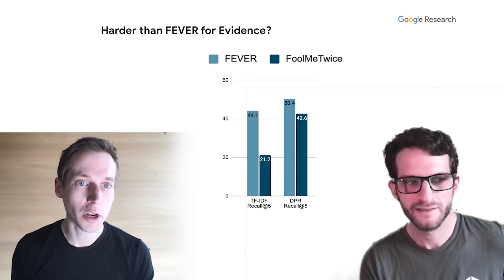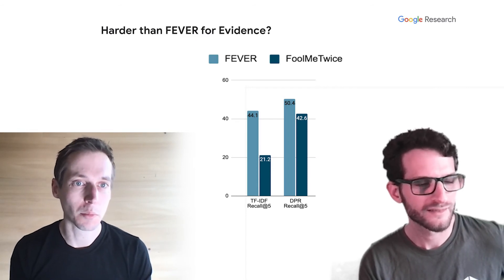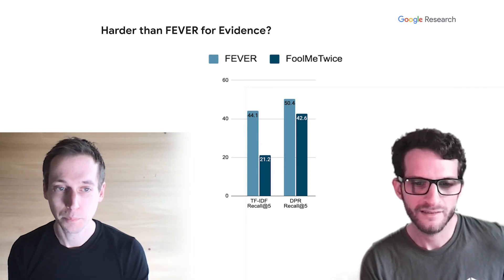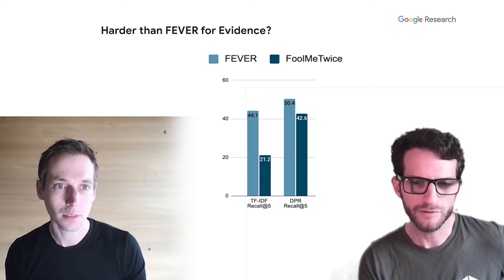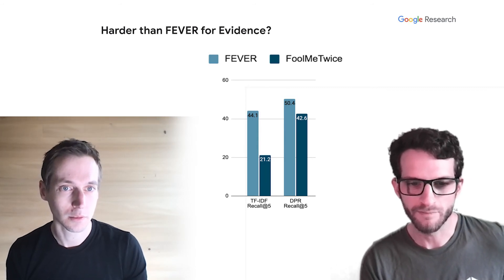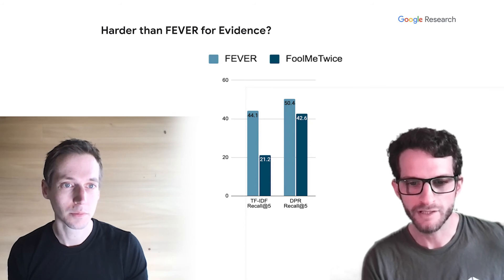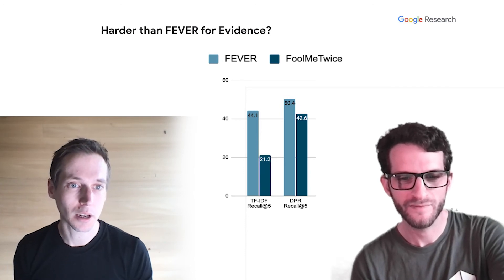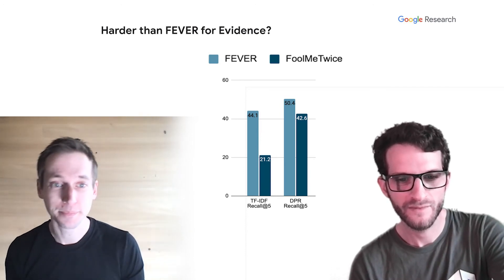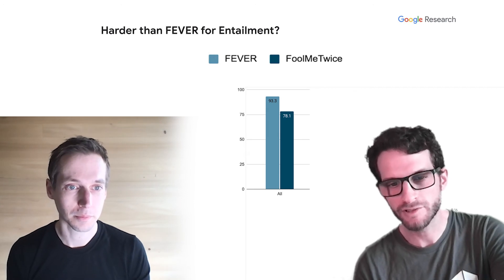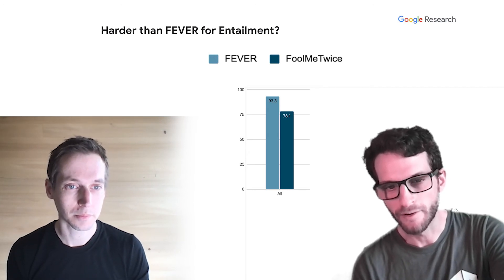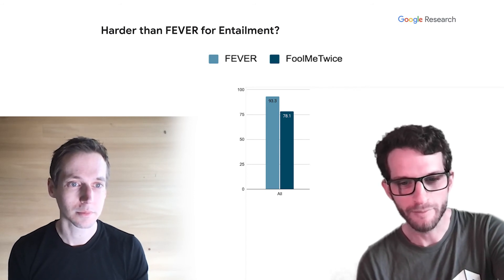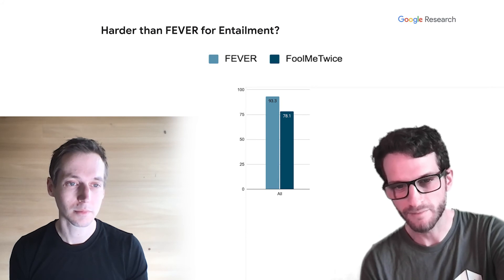The first question is whether it's harder to find evidence in Fool Me Twice than in FEVER. Yes. Let's focus on recall at 5, which is what a human might reasonably look at. Fool Me Twice has about half the recall, dropping from the mid-40s to the low-20s. But the drop is less pronounced for DPR — the state-of-the-art neural retrieval system — only dropping 8 points from 50 to 42. But recall is only half of the story. The big takeaway is that Fool Me Twice is indeed harder, with a drop of about 15 accuracy points.